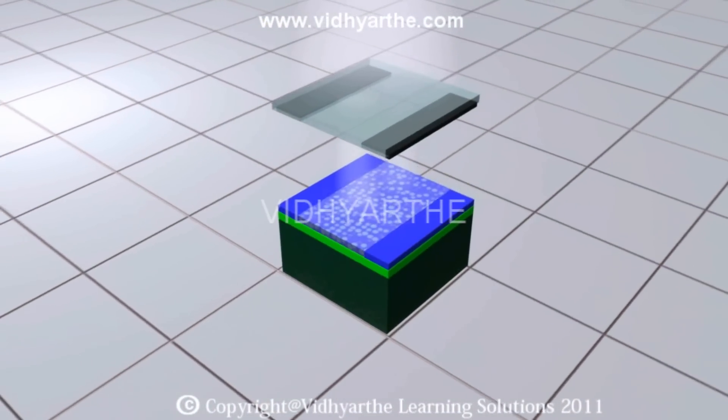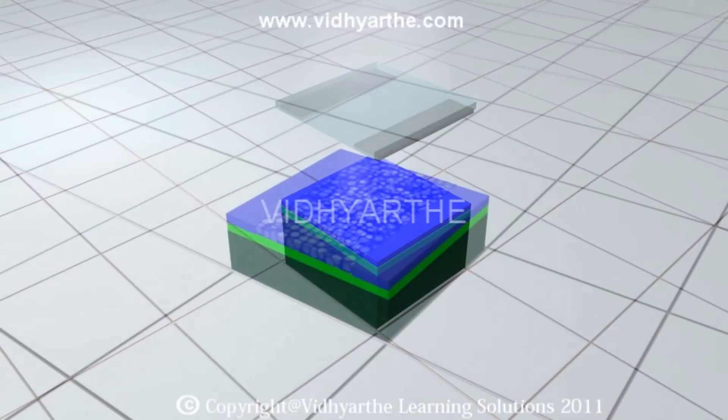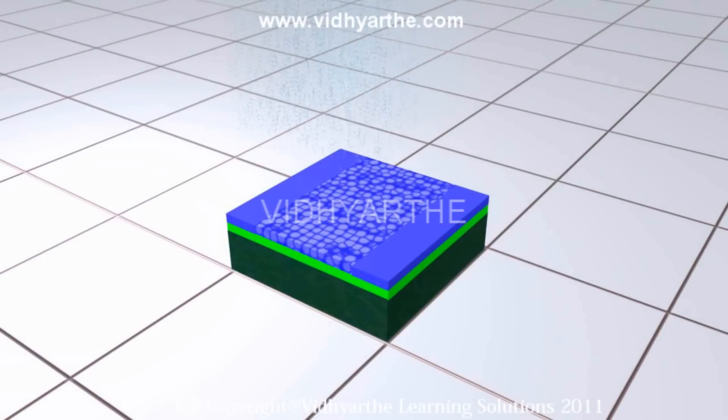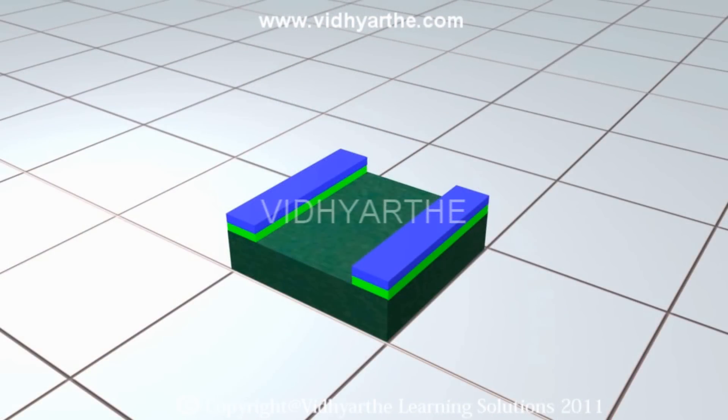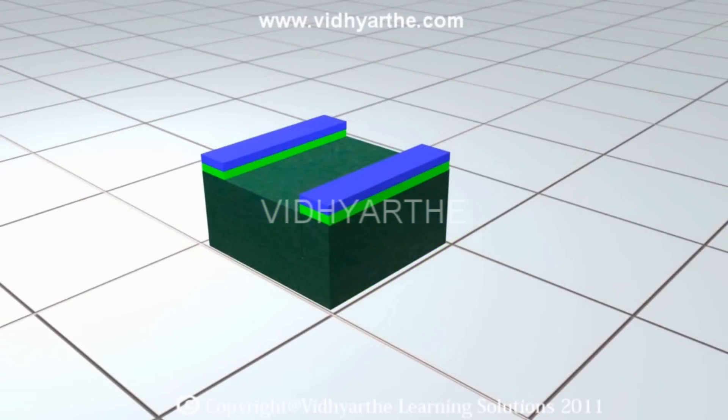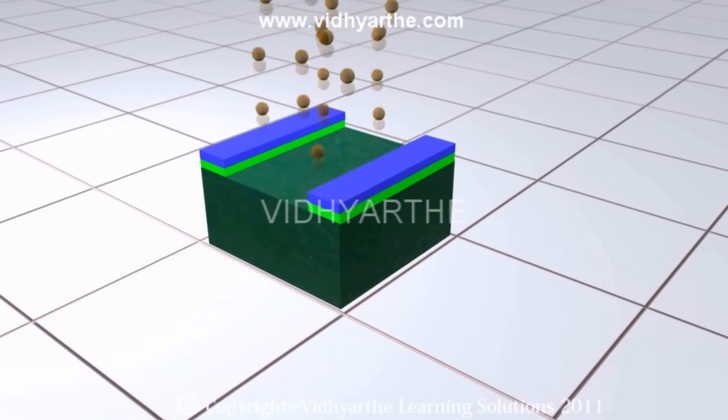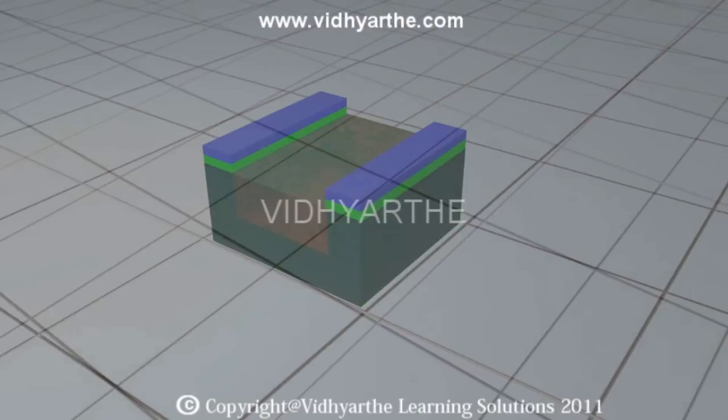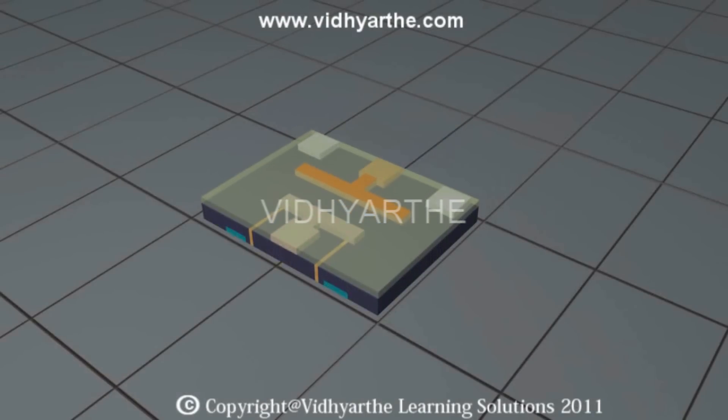The regions exposed to the photoresist are then removed using acids in a process called etching. The unexposed regions protect the lower layers from reacting to material deposition, thereby forming specific patterns.